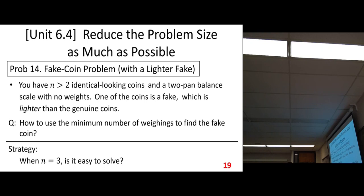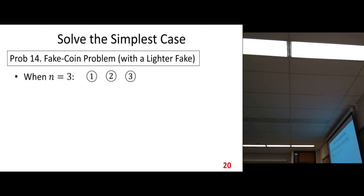N equals three, can you find a solution quickly? I believe everyone can find quickly. One weighing, you can find it. So let's put coin one, coin two on this two-pan balanced scale. How many cases do we have? We have three possibilities. Let's do analysis. For the first case, coin one lighter. If coin one lighter, coin one is fake. That's enough.